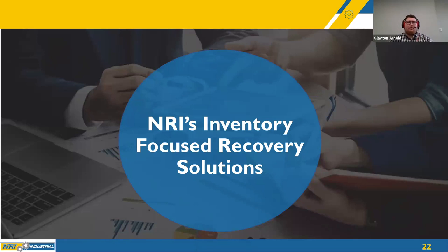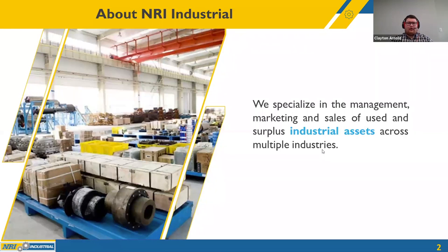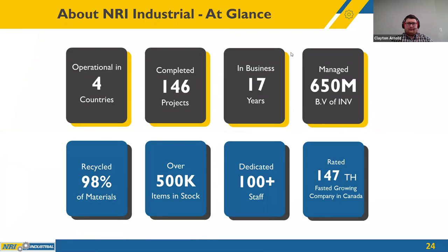Thank you Steve. Before we talk more about our inventory-focused recovery solutions, let me tell you a bit more about who NRI is. NRI specializes in the management, marketing, and sales of used and surplus industrial assets across multiple industries. We have operations in over four countries, have completed 146 projects, been in business for 17 years, and managed more than $650 million of book value of inventory for clients. 98% of materials through our warehouse are recycled, we have over 500,000 items in stock, over 100 dedicated staff, and we were rated the 147th fastest-growing company in Canada.